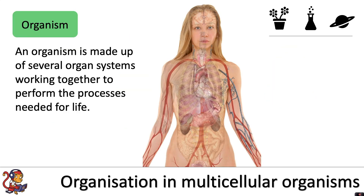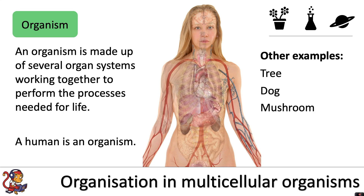The final level is the organism. An organism is made up of several organ systems working together to perform the processes needed for life. A human is an example of an organism. Other examples of this highest level include a tree, a dog, and a mushroom.